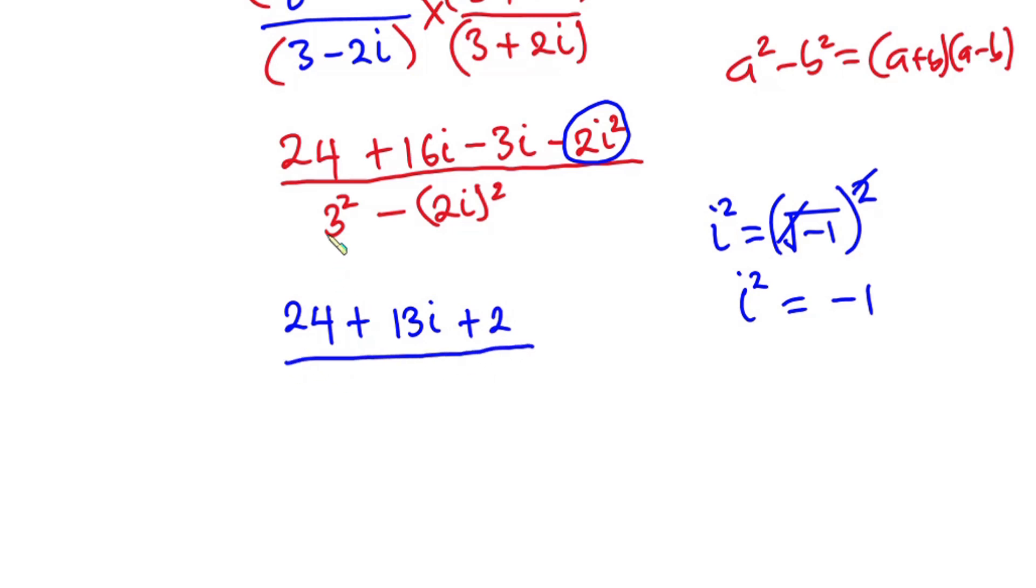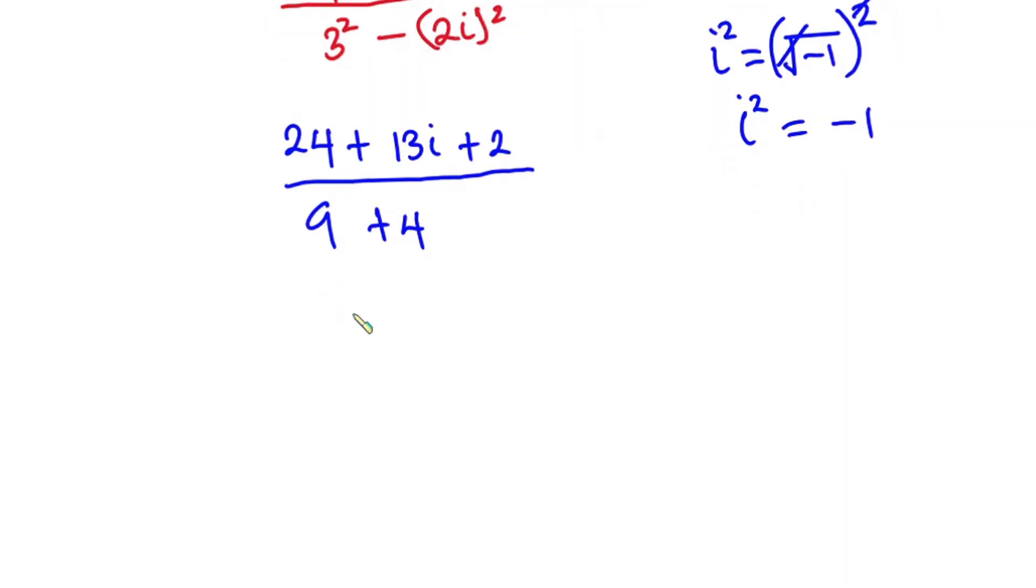All divided by 3 squared is 9. So 2 squared is 4 then times negative 1 is negative 4 times this negative 1. So we have plus 4 over here. 24 plus 2 is 26, all divided by 9 plus 4 is 13. Now let's factor 13 out.